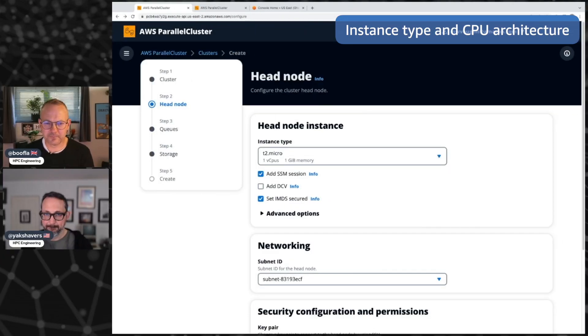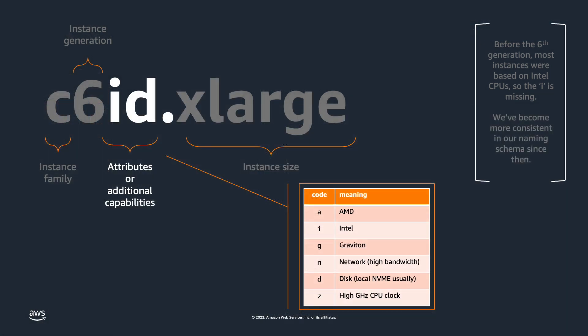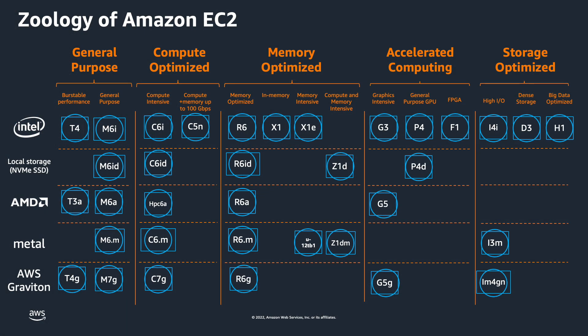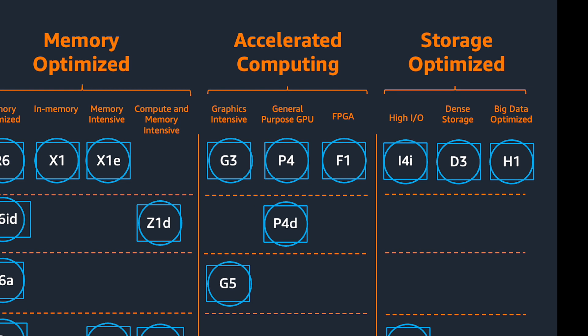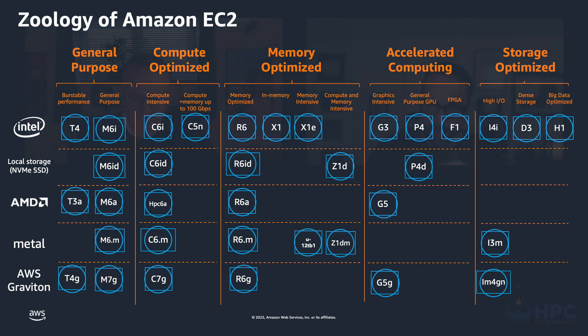The first thing we need to decide on is your head node instance type. We have to start by deciding what our CPU architecture is going to be. By default, you're probably going to want to use x86 — that's Intel or AMD, the traditional processors. But if you want to compute on Graviton processors, then you select a Graviton instance type. If you want your head node to support accelerated graphics, then you need to select an instance type with a GPU. Be aware that GPUs are in demand, and so it can be costly to leave one running all the time.